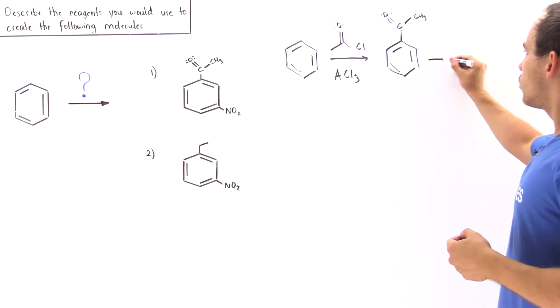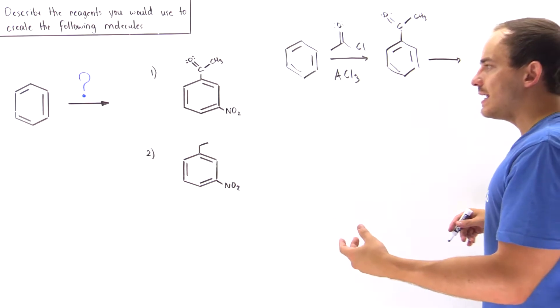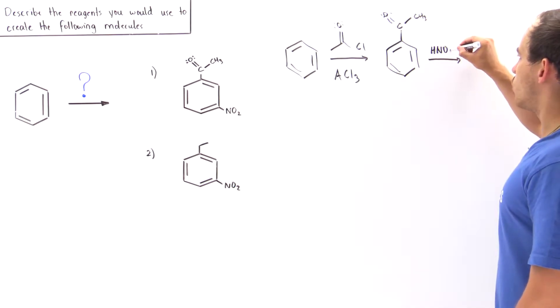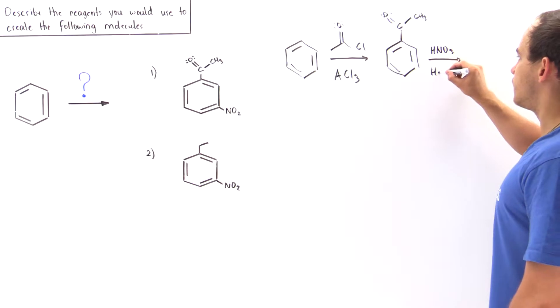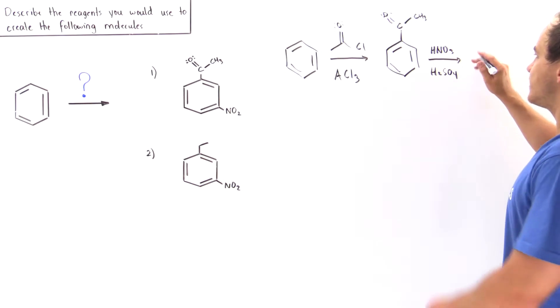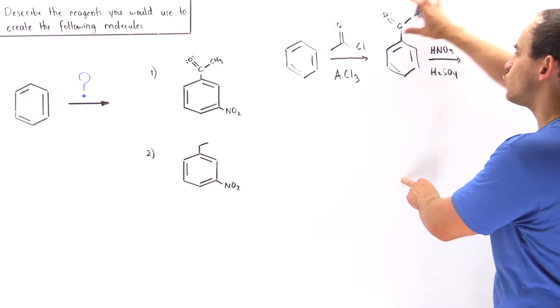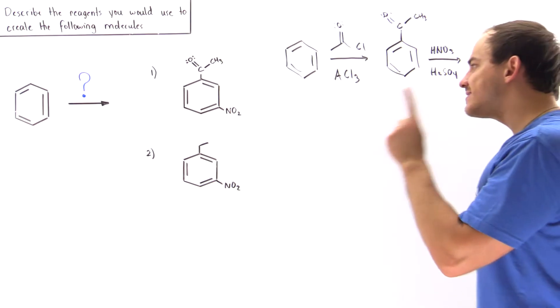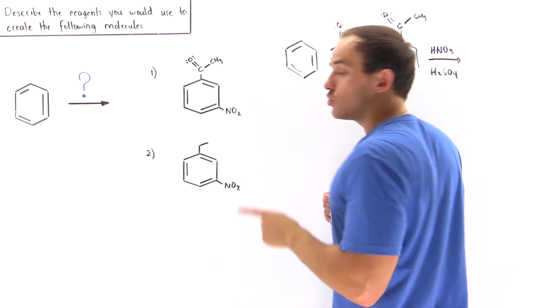Now in the second step we can mix in our nitric acid HNO3 in the presence of sulfuric acid. So this is our nitration reaction and we can nitrate our benzene exactly at the meta position. Why?